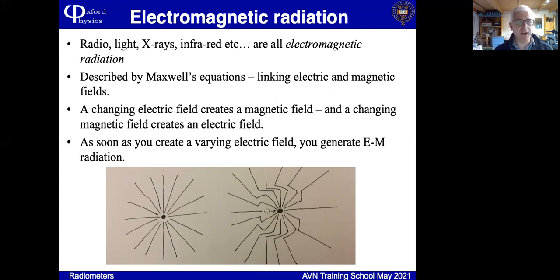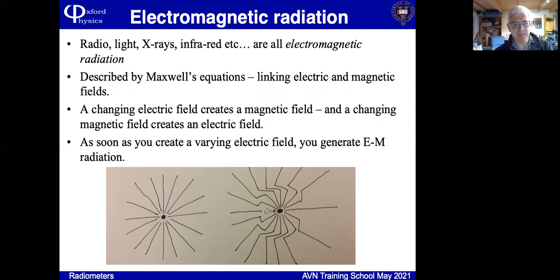You generate a varying electric field by taking hold of a charge and shaking it. Imagine an electron sitting quietly in space with electric field lines sticking around it. If you grab hold of it and drag it to the right, those electric field lines are now in a different place. The information that the charge has moved can only propagate outwards at the speed of light, so we have this kink in the electric field which moves outwards spherically from the electric charge. That kink is the electromagnetic wave.